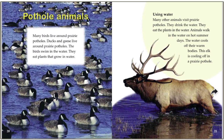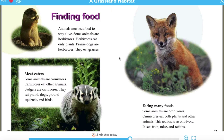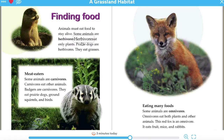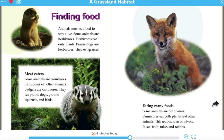Just by looking at the pictures the illustrator put in here, you can tell that there are ducks, geese, and elk. Then we talk about the different types of animals: herbivores, carnivores, and omnivores. Herbivores eat only plants. Carnivores eat other animals. Omnivores eat both plants and other animals.